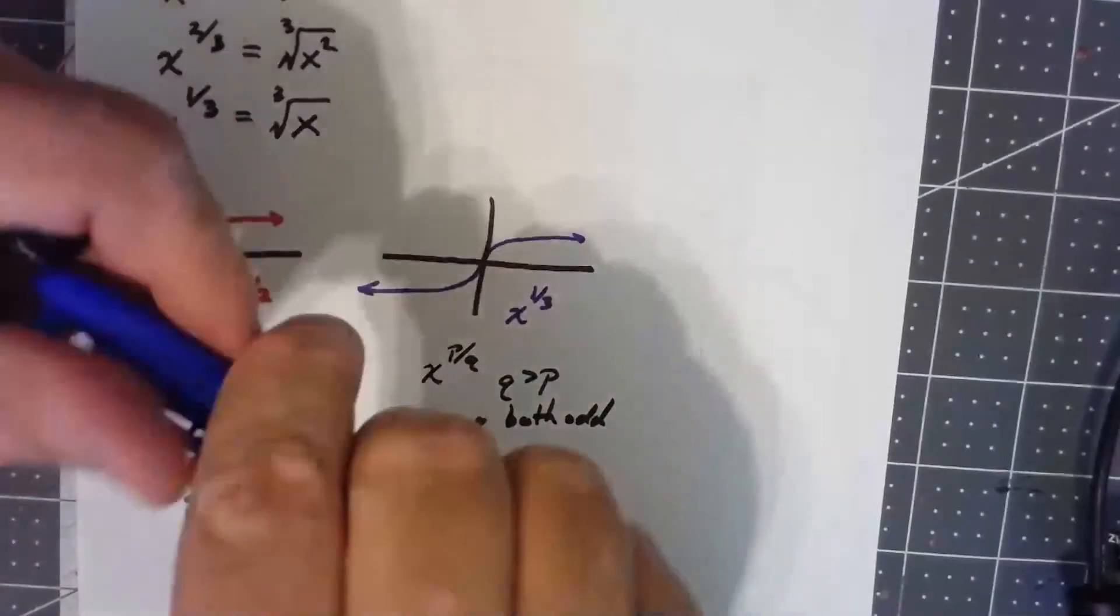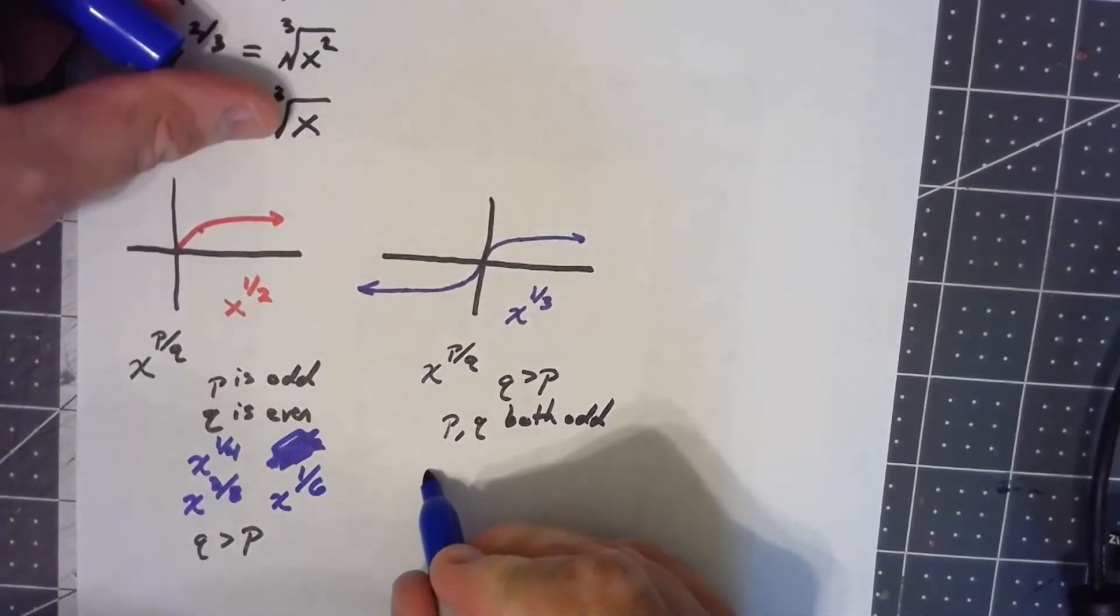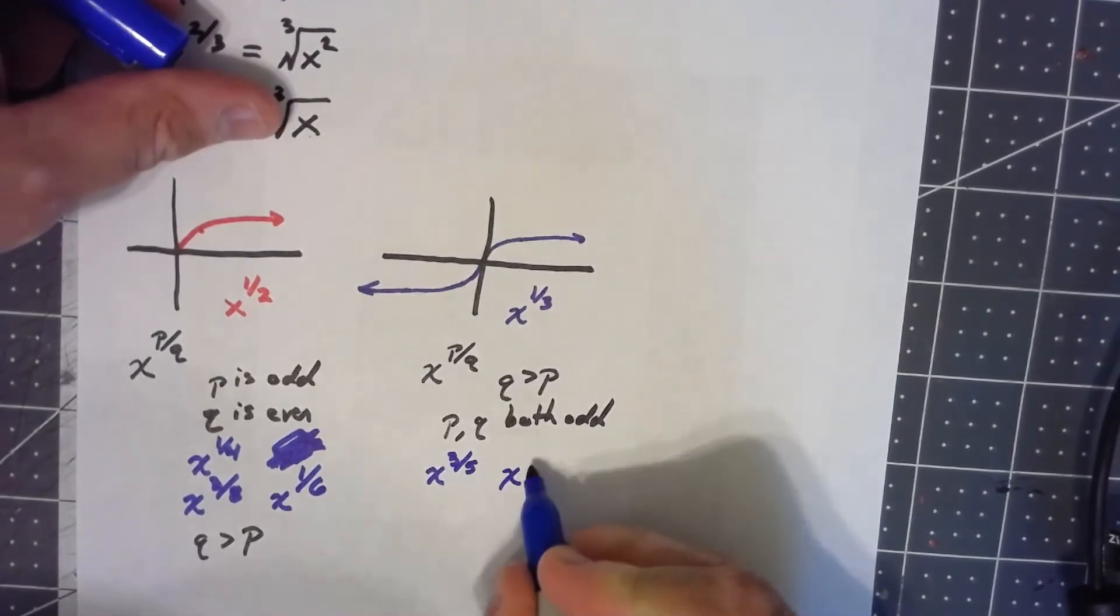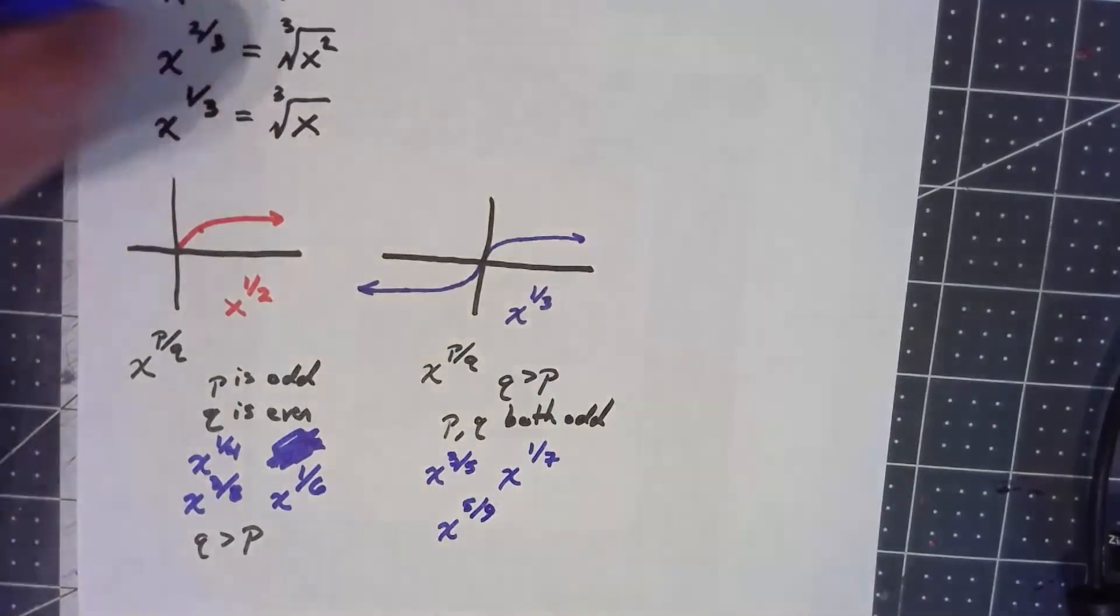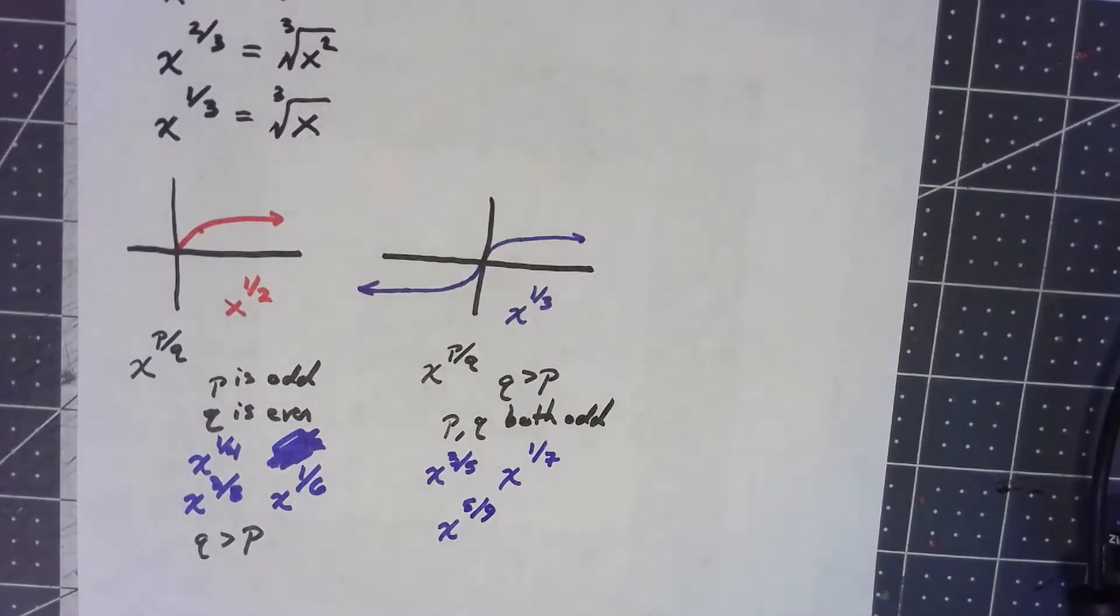So the same basic shape here would apply to x to the 3/5, x to the 1/7, x to the 5/9. Anytime both the top and the bottom are odd numbers. And again, the bottom has to be bigger than the top.